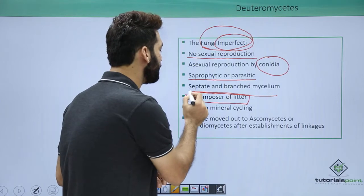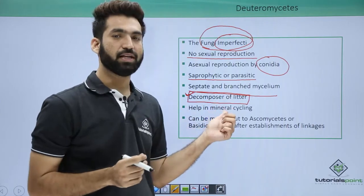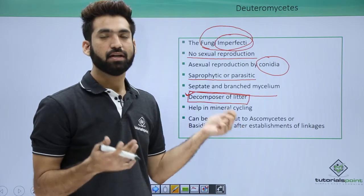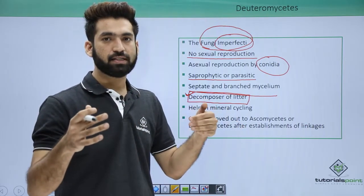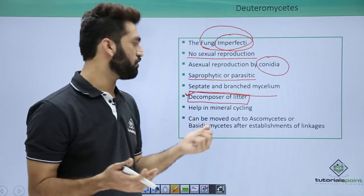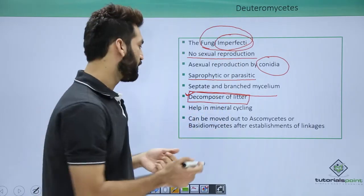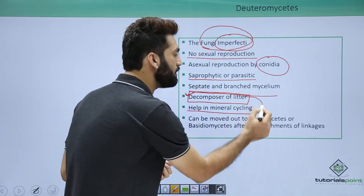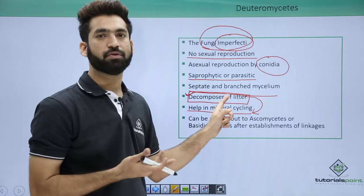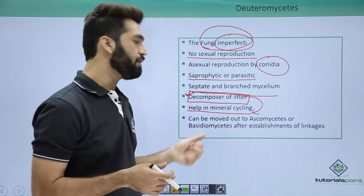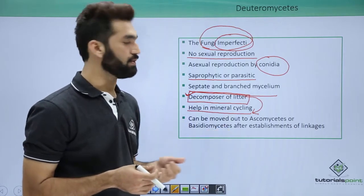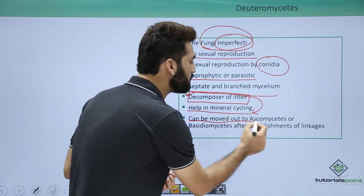A very important point that has been asked in most exams is that Deuteromycetes are decomposers of litter. Which particular class of fungi has most members as decomposers? The answer is Deuteromycetes. They help in decomposition of litter and therefore help in mineral cycling. Questions can be asked about decomposition or about which class helps in mineral cycling.